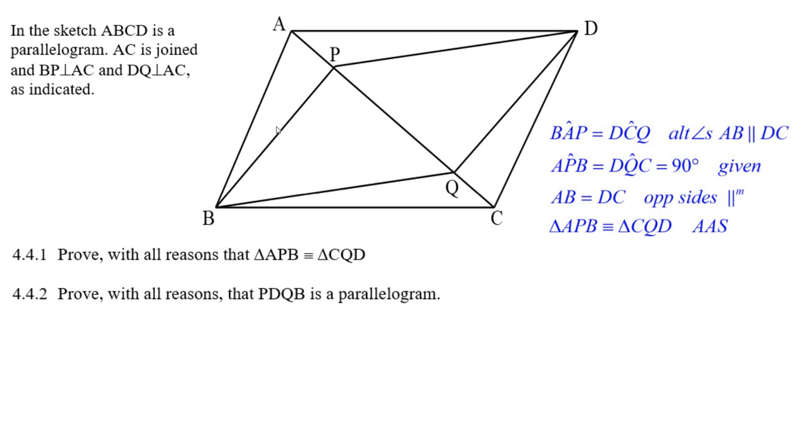I've got that angle and that angle, and then we're given that this is perpendicular, so that's 90 degrees there. And DQC, this angle here must be 90 degrees. That's just a given because it was given that it was perpendicular there. And now we know it's a parallelogram, so AB is equal to DC, the opposite sides of a parallelogram.